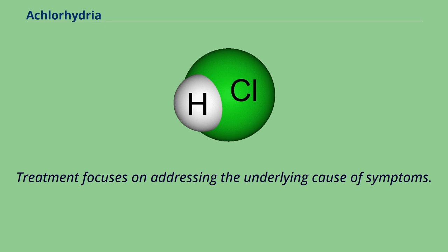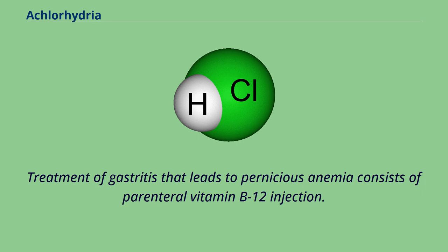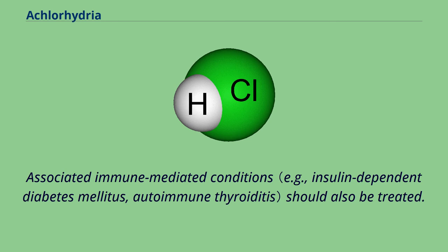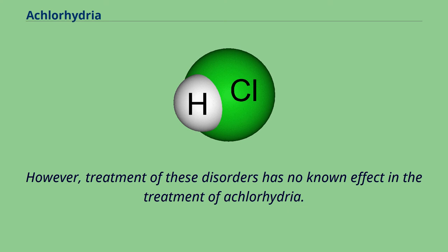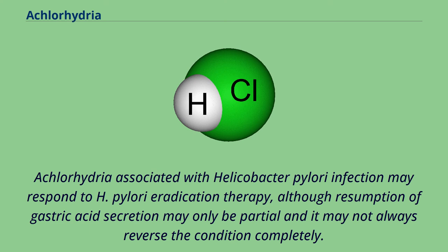Treatment focuses on addressing the underlying cause of symptoms. Treatment of gastritis that leads to pernicious anemia consists of parenteral vitamin B12 injection. Associated immune-mediated conditions should also be treated; however, treatment of these disorders has no known effect on achlorhydria. Achlorhydria associated with Helicobacter pylori infection may respond to H. pylori eradication therapy, although resumption of gastric acid secretion may only be partial and may not always reverse the condition completely.